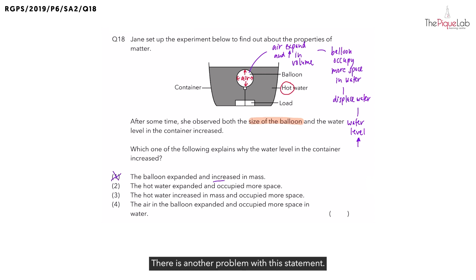There is another problem with this statement. Did the balloon increase in mass? No. In fact, the mass of the balloon should stay the same. Why is that so? Was any air added or removed from the balloon? No air was added or removed from the balloon. So, the amount of air inside the balloon is the same. And that is why the mass of the balloon stays the same. Let's write that down.